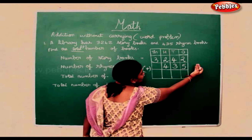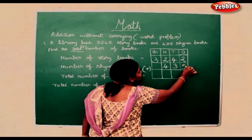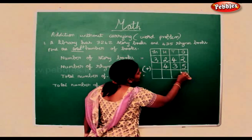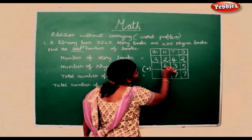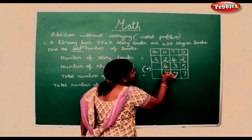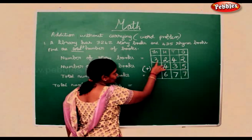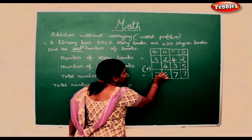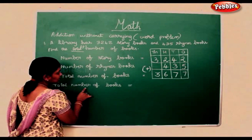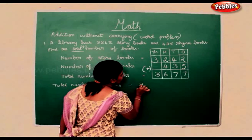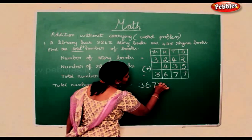Now we will start counting from the ones. 5 add 2 is 7. 3 add 4 is 7. 4 add 2 is 6. Now 3 — there is no number here, so we just carry it down as 3. So the total number of books is 3,677.